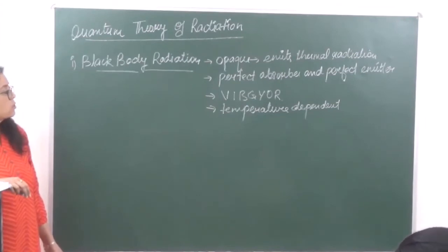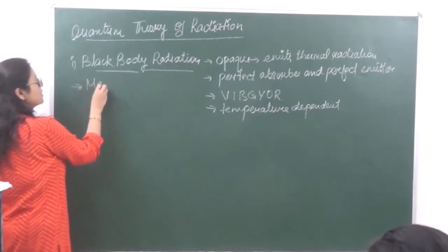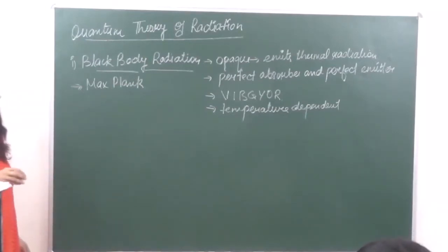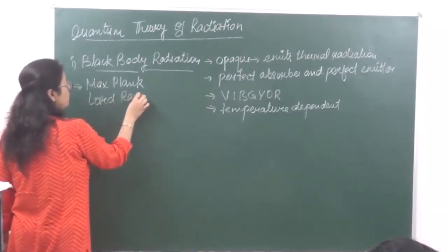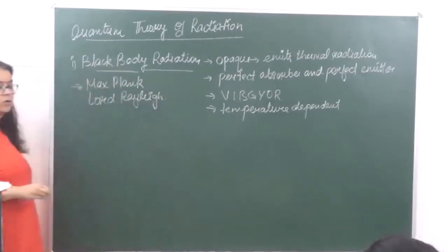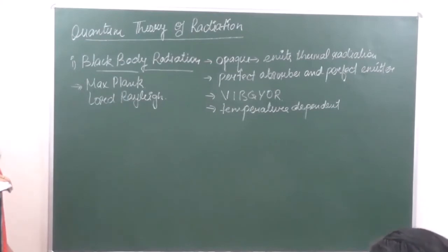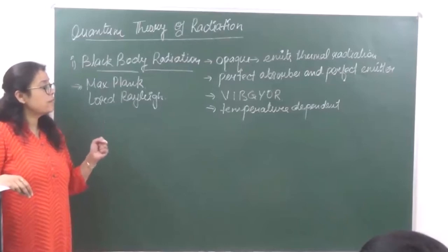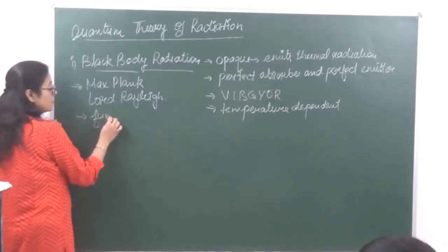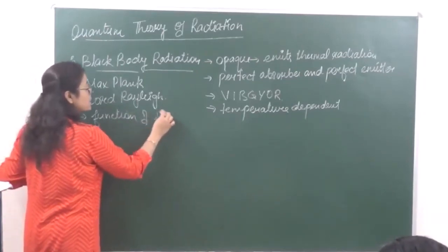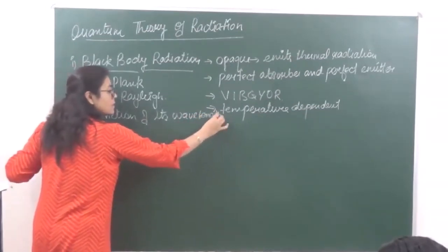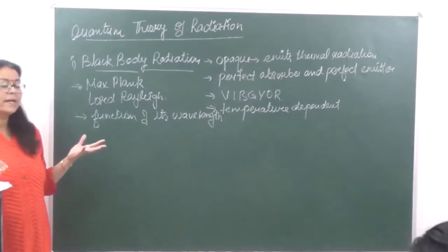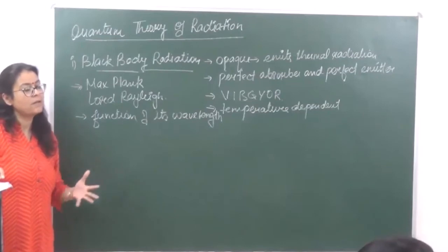Two scientists were working on this. The first scientist was Max Planck and the second was Lord Rayleigh. Both were working on black body radiation. They described that if more and more intensity of radiation is given, the intensity of black body radiation was a function of its wavelength. As intensity increased, wavelength increased to a certain point, and then intensity started decreasing while wavelength continued increasing.